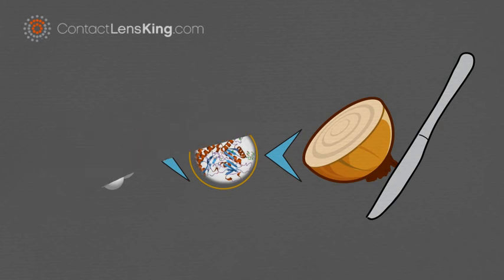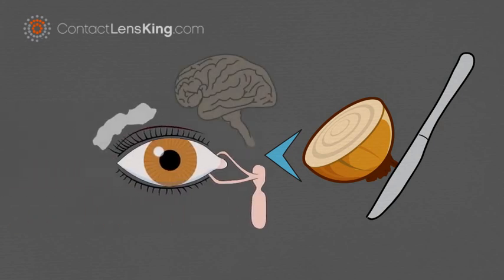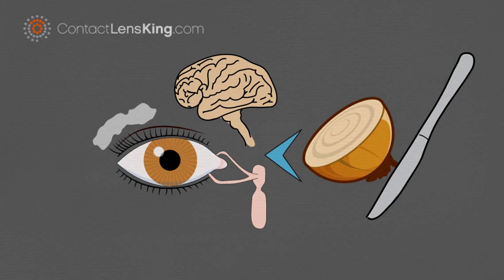When LF comes into contact with the eye, it signals to the brain that there is an irritant present. This signal causes the brain to react in a defensive way, triggering the tear glands.